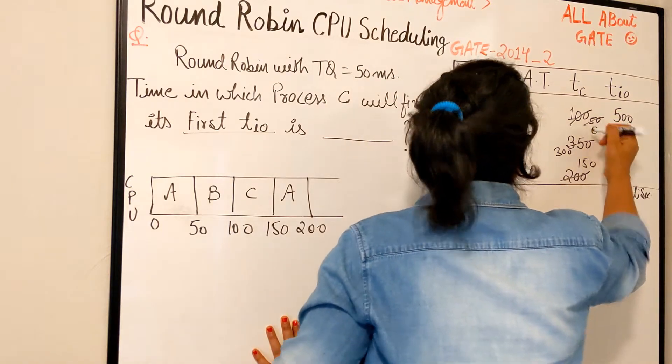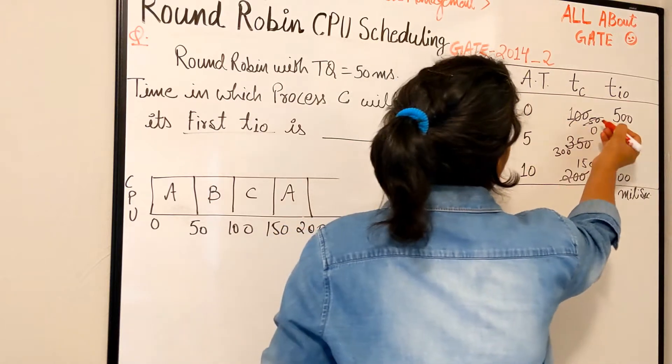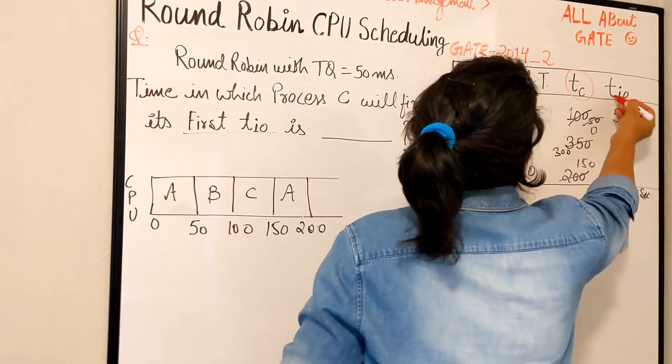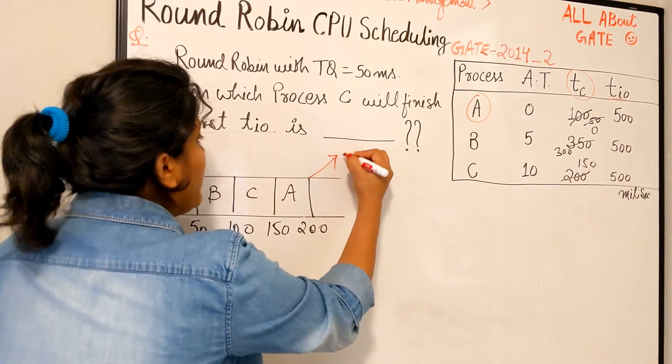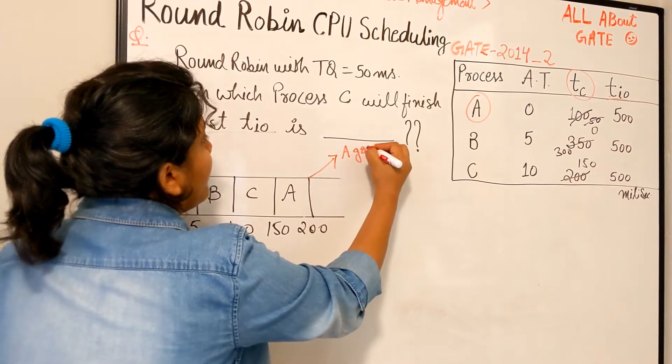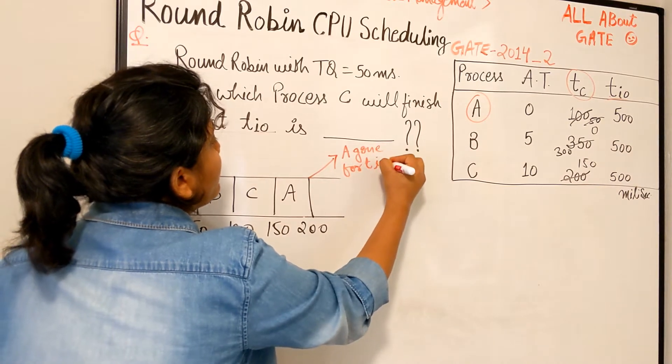Next, once again A, it needs 50 more, so it goes up to 200. So now you see here, what I mean to say is, until A finishes its complete TC, it will not go for the TIO. So now here I say at this point A gone for TIO.